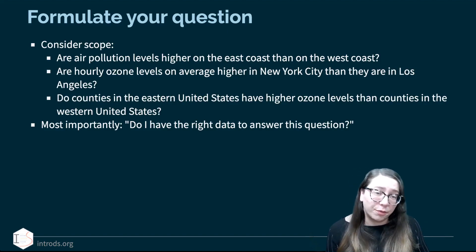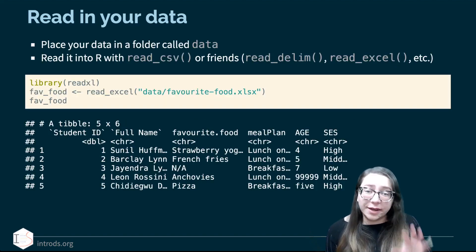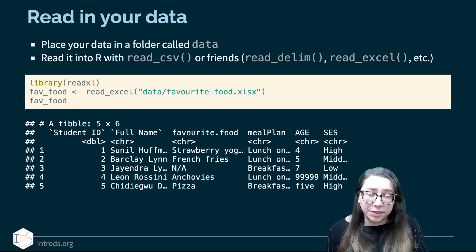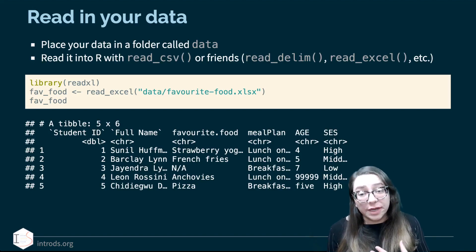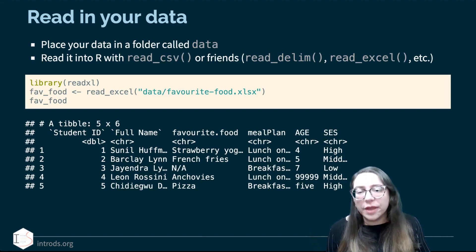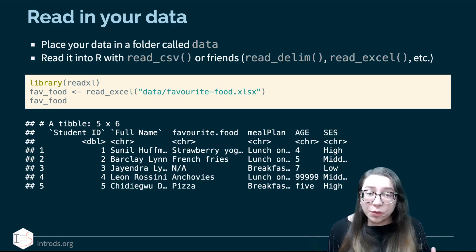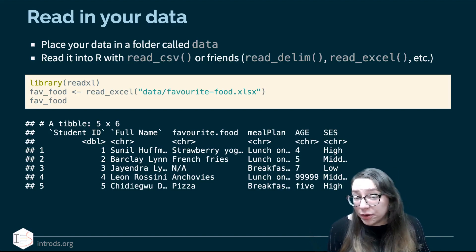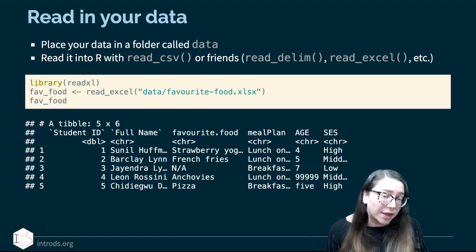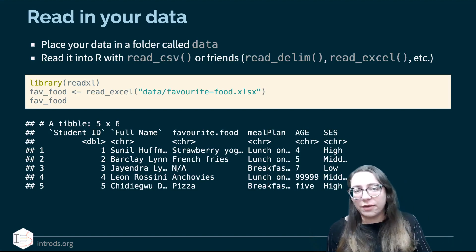Then you want to read in your data. Place your data in a folder called 'data' in your project repository, then read it into R with read_csv or similar functions. Just make sure the file is not corrupt and is actually readable. You might find an interesting dataset but not know how to read it into R because it comes in a different format — this is a good time to ask, and we might just give you the function to use.